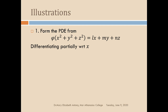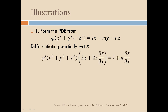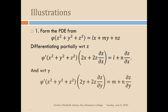When we differentiate with respect to x, we get phi dash of x squared plus y squared plus z squared into — applying the chain rule — 2x plus 2z into dou z by dou x, equal to l plus n into dou z by dou x. When we differentiate with respect to y, we get phi dash of x squared plus y squared plus z squared into 2y plus 2z into dou z by dou y, equal to m plus n into dou z by dou y. Now we have to eliminate phi dash from both these equations.